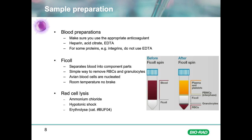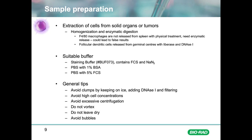In addition to mechanical disruption, extraction of certain cells from secondary lymphoid tissue and solid organs can require enzymatic digestion. The enzymes are required to break down the extracellular matrix and are often tissue-specific. Without use of the enzyme, you may not obtain a single-cell suspension or may not release your cell of interest, leading to underestimation of cell numbers.